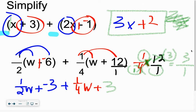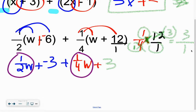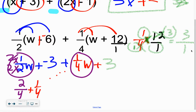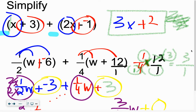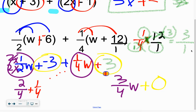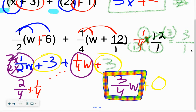From there, we can go ahead and start adding up our like terms. When we've got fractions, don't worry about it — we can still work those out. You're just going to make common denominators. The common denominator between one-fourth and one-half is 4. I'm going to change the one-half into fourths: 2 times 2 on the bottom gives me 2 on the top. So 2 fourths plus 1 fourth gives us 3 fourths w. Now add up your other like terms: a positive 3 plus a negative 3 is just 0, so the answer is 3 fourths w.